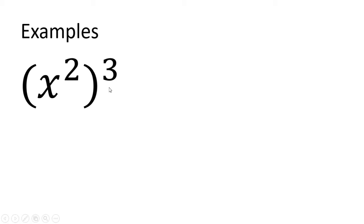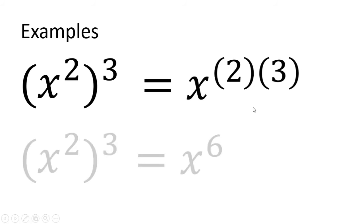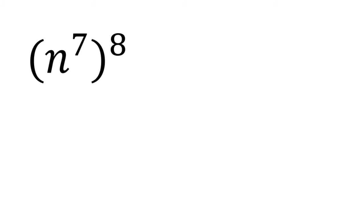Example one: x to the power of 2, quantity raised to the power of 3. To answer this, we multiply the exponents: 2 times 3. The final answer is x to the power of 6. Next: n to the power of 7, quantity raised to the power of 8. To answer this, we multiply the exponents: 7 times 8.